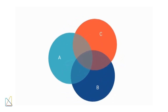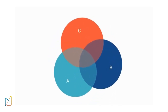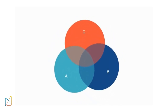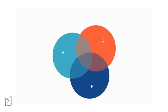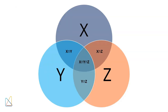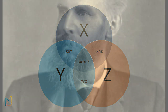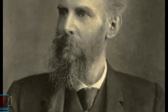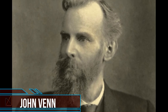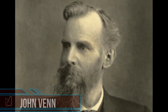Did you know that the simple yet powerful Venn diagram was invented by one man? A man whose work has made it easier for us to visualize relationships and sets. Meet John Venn, the mathematician who made logic and set theory more accessible.